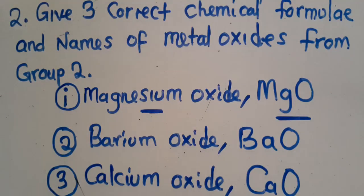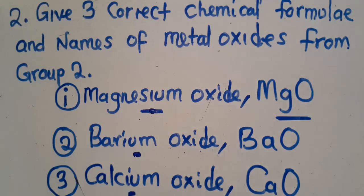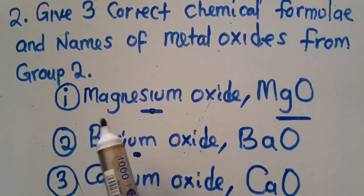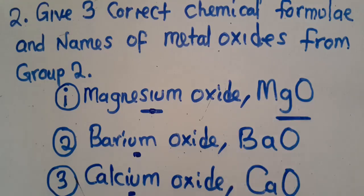All these are group 2 elements — magnesium, barium, calcium. Even strontium — you can pick any element from group 2, react it with oxygen, and see the product formed. This is what you need to know and understand. When I tell you to write magnesium oxide, you know how to come up with correct chemical formulas and understand the language of chemistry.